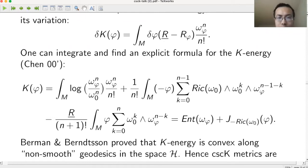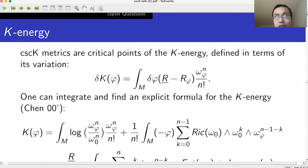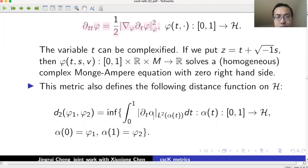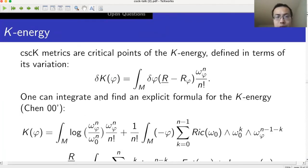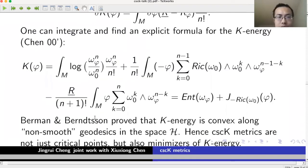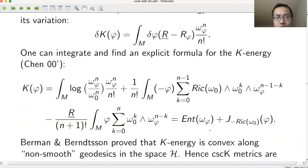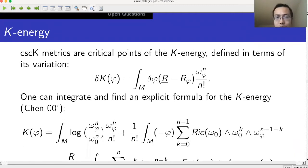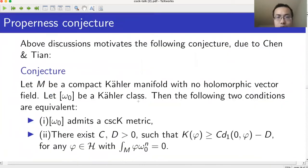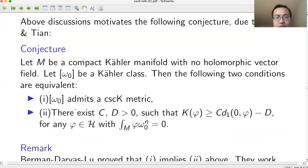Berman and Berndtsson proved that the K-energy is convex along geodesics in H. Thus cscK metrics are not just critical points but minimizers of the K-energy. This motivates the properness conjecture, which says that cscK metrics exist if and only if the K-energy has linear growth as the d_1 distance goes to infinity — i.e., the K-energy controls the d_1 distance linearly. The d_1 distance is defined using the L¹ norm of tangent vectors rather than the L² norm (which gives d_2). This is analogous to a convex function on ℝⁿ having a minimum if and only if it grows at least linearly at infinity.